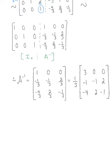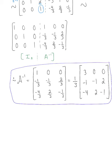This is our final answer. As you practice, I encourage you to double-check this using the row-column rule. Verify that A multiplied by A inverse equals the 3 by 3 identity, and since matrix multiplication is not generally commutative, also check that reversing the order of multiplication still gives the identity.